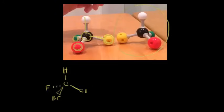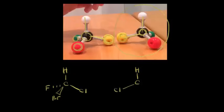This molecule on the right — we already saw it in the previous video — is the mirror image of the one on the left, but you can't superimpose it on the one on the left; therefore it's a different molecule. Let's go ahead and draw it. Once again it has a carbon in the center bonded to a hydrogen going up, also bonded to a chlorine in the plane of the page but going to the left. The bromine is still coming out at us, and the fluorine is going away from us in space.